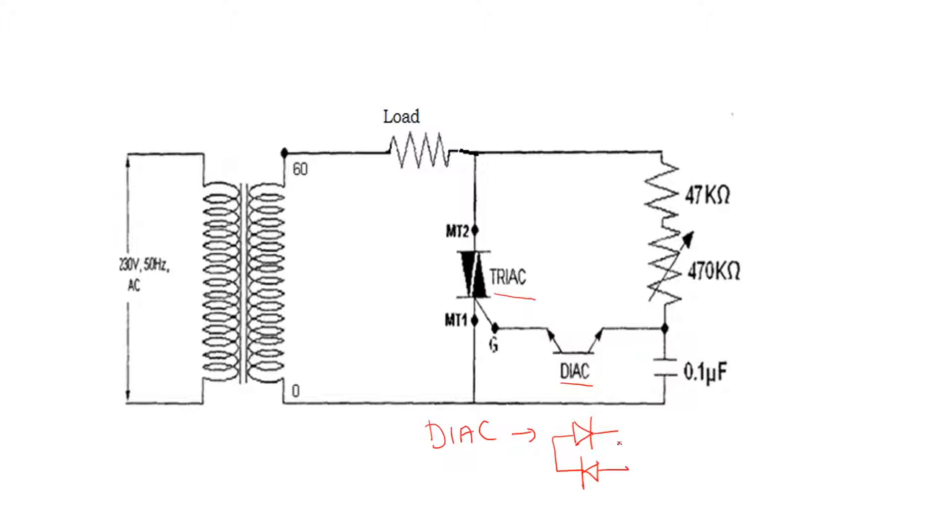This is a DIAC. Now we have two resistors - I will name this resistor as R1, this resistor as R, and the capacitor as C. Resistance R1 is constant and resistor R is variable. This resistor R and capacitor C will decide the firing angle of this particular TRIAC. The time constant of this R and C combination is (R1 + R) × C.